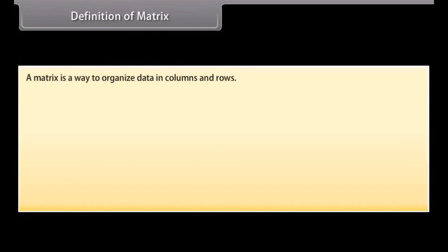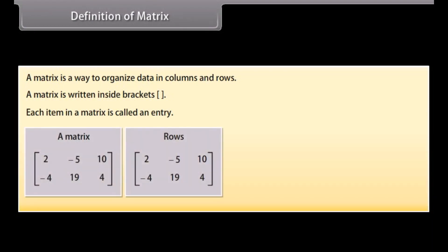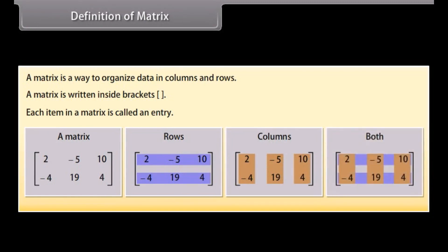Definition of matrix. A matrix is a way to organize data in columns and rows. A matrix is written inside brackets. Each item in a matrix is called an entry. Look at this matrix. It has two rows and three columns. The entries of the matrix are 2, minus 5, 10, minus 4, 19, 4.